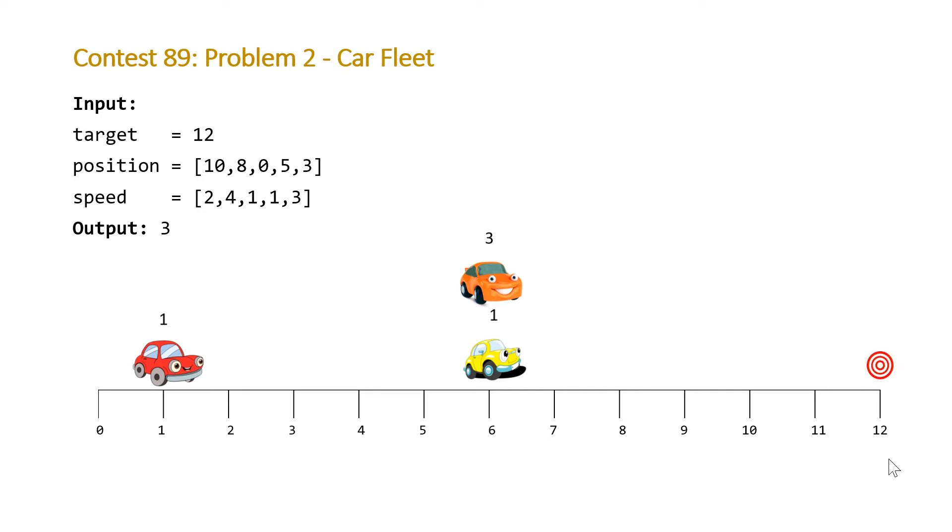These cars go away, and then we're going to process our next hour. And the yellow and orange car are going to arrive at our target, and that makes two fleets. And then we just have the red car left, and then this is going to arrive at the target as well. So that's three different fleets. So that's visually how it works.